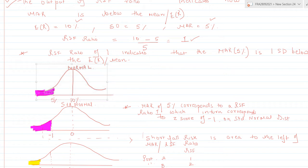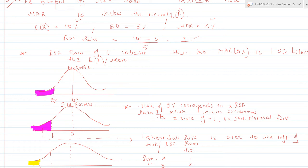This data plots on the normal distribution, and on the standard normal it maps accordingly. A MAR of 5% on the normal distribution corresponds to an RSF ratio of 1, which in turn corresponds to a Z-score of minus 1 on the standard normal distribution. If the RSF ratio of a portfolio is 2, it would correspond to a Z-score of minus 2.